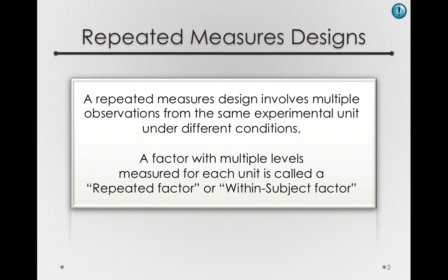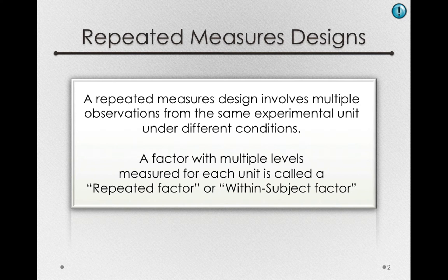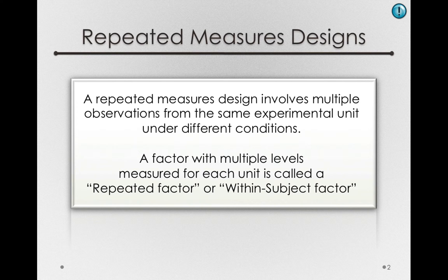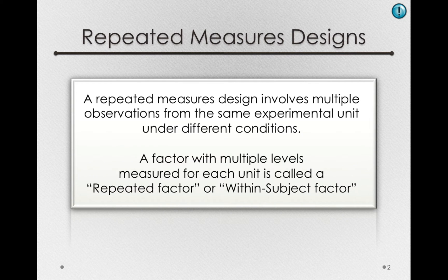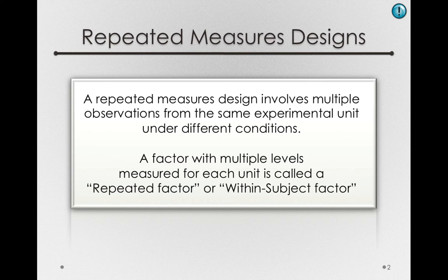Now, some special terminology here. A factor with multiple levels measured for each experimental unit is called a repeated factor or a within-subject factor. Notice the terminology: within-subject, meaning within a single individual, we have repeated observations on that factor. Now, the types of factors we've had up to this point, we would call between-subject factors. That is, factors whose measurements are manipulated or observed between or across different subjects.